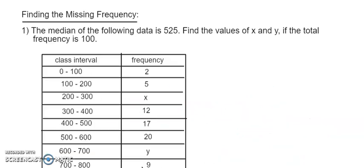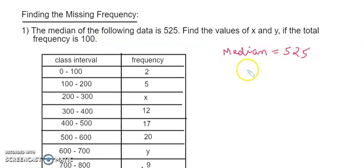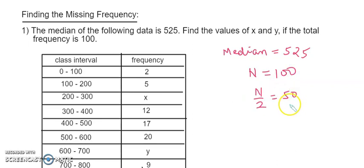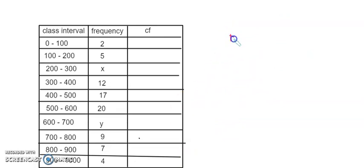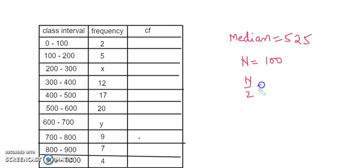The last part we are going to talk about using the median formula is finding the missing frequency. The question says the median is 525 and the total frequency n is given as 100. We can directly find n by 2 equals 50. Median is 525, total frequency is 100, so n by 2 is 100 divided by 2 equals 50.